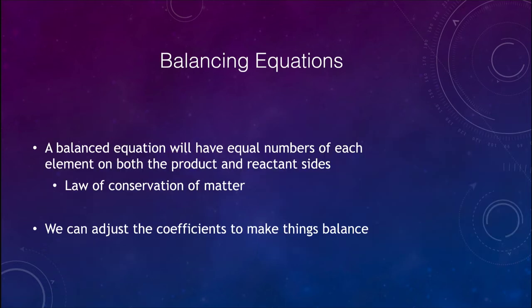When we balance equations, the balanced equation will have equal numbers of each element. In a chemical equation, elements are not changed — when we get to nuclear reactions that will change, but here a balanced equation must have the same number of each type of atom on the product side and the reactant side.